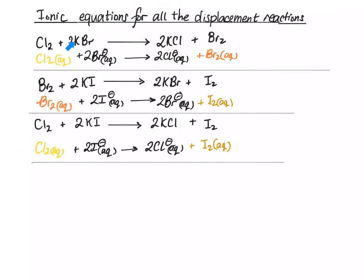So, for the Cl₂ plus 2KBr goes to 2KCl plus Br₂, the ionic equation is Cl₂(aq) plus 2Br⁻(aq) goes to 2Cl⁻(aq) plus Br₂(aq). Similarly, the ionic equation for the displacement of iodide by bromine is Br₂(aq) plus 2I⁻(aq) goes to 2Br⁻(aq) plus I₂(aq). And finally, Cl₂ plus 2I⁻(aq) goes to 2Cl⁻(aq) and I₂(aq).